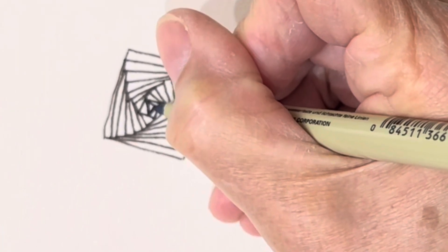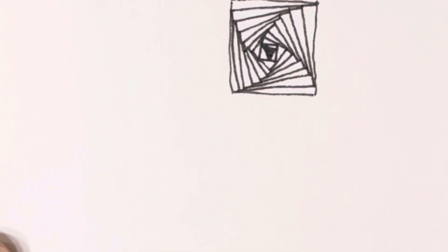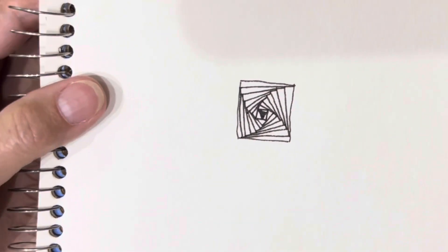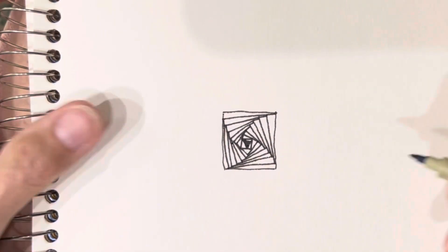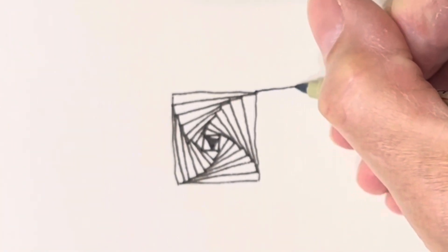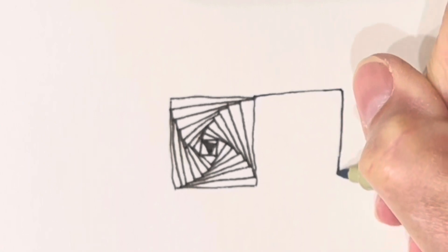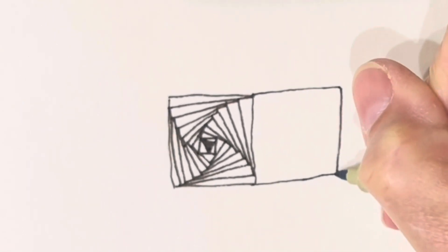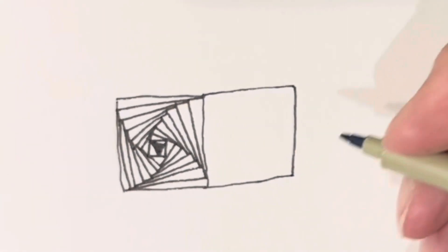And then I usually fill in the last little thing. Okay, so it's already looking a little bit curvy, but watch what's going to happen now. All right, so I'm making another square. It's approximately the same size. It really doesn't matter.